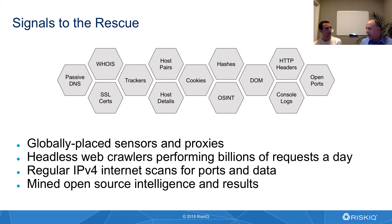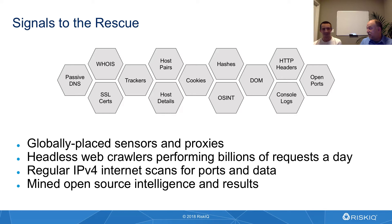Why is it so important to use a global proxy network when collecting this data? Having proxies all over the world and having our traffic egress through them is important because some sophisticated actors may choose to only deliver their malicious payload to a particular region. They may only look for browsers running a certain language pack. If we don't have a presence in that country, we may not actually see the malicious event taking place. Or the threat actor might say, we're blocking all traffic from RISC-IQ's IP space, so you can't come at all.